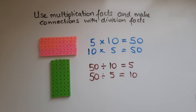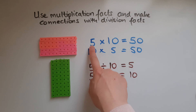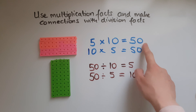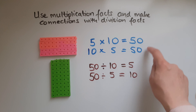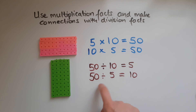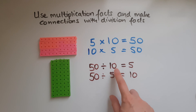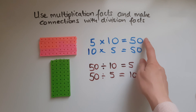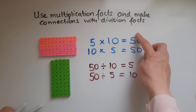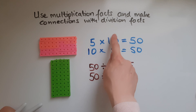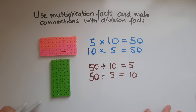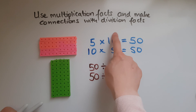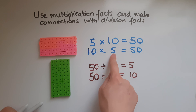What this tells me is that multiplication and division are opposites of each other. We started with 5 times 10, which gave us 50, or 10 times 5, which also gives us 50. That larger total has now been shared into 10s — divided by 10 — and it gave us 5. So I'm reversing the process: 50 divided by 10 gives me 5, and 50 divided by 5 gives me 10.